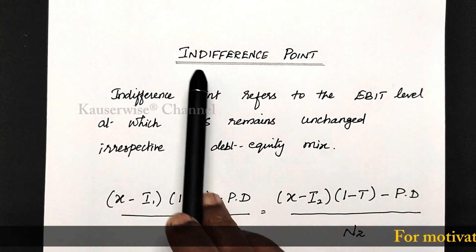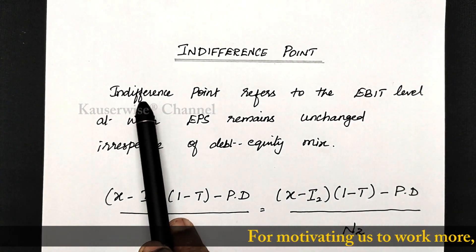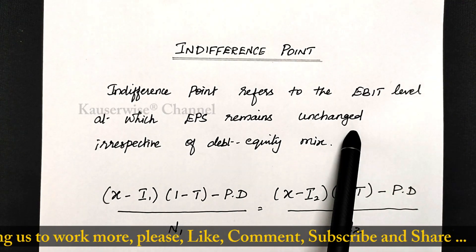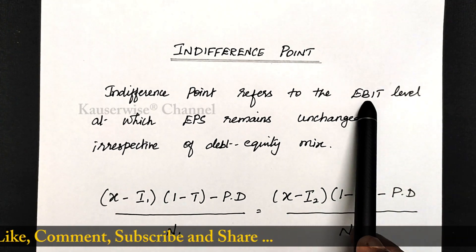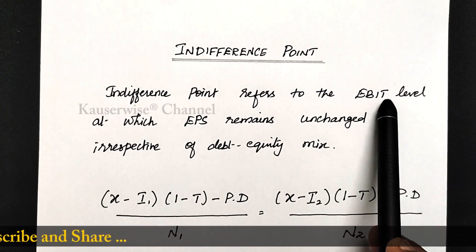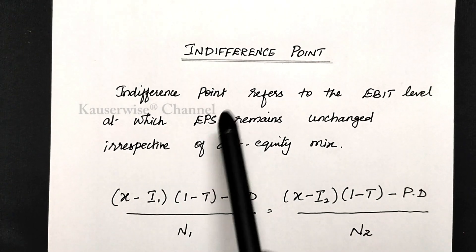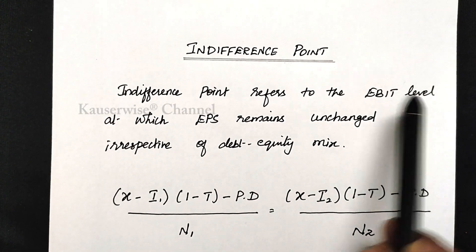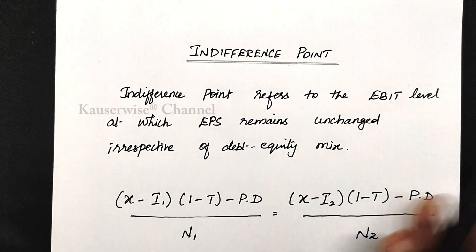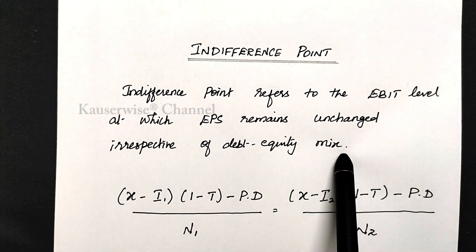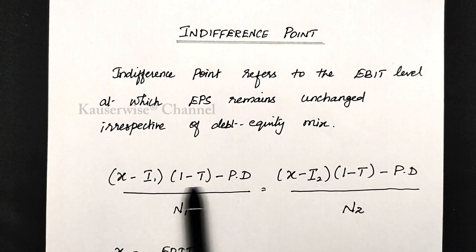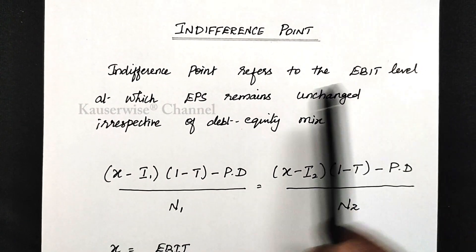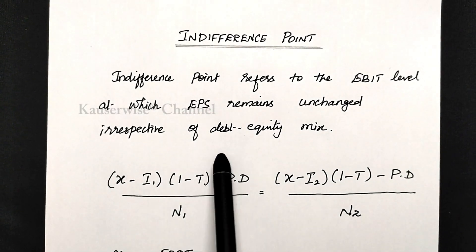Before we see the problem, let us try to understand the meaning of indifference point. Indifference point refers to the EBIT level at which EPS remains unchanged irrespective of debt-equity mix. EBIT stands for earnings before interest and tax. EPS stands for earnings per share. So, indifference point is a point where we are going to calculate the EBIT level at which earnings per share is going to remain the same irrespective of debt-equity mix.